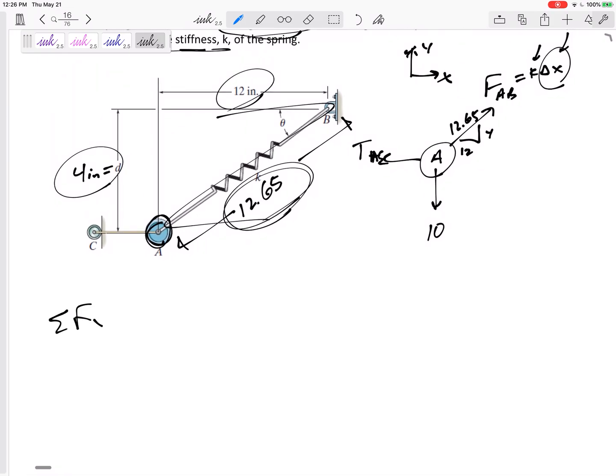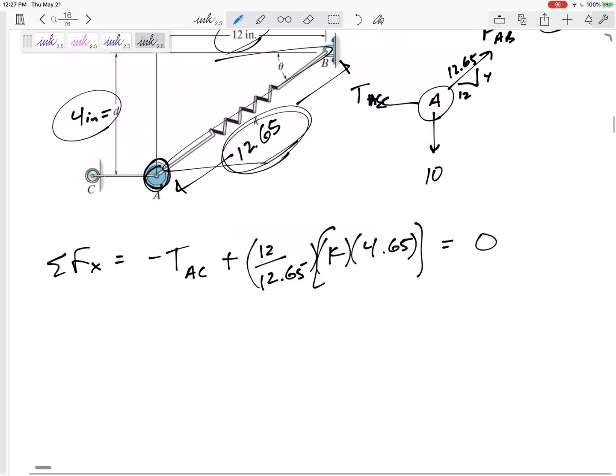Okay, so now I think I'm ready to sum the forces in the X direction. I've got negative tension in AC. I've got positive the 12 over 12.65 component of the force, and the force is K times 4.65 right there, and set that equal to zero. That has two unknowns. I don't know K. I don't know tension AC.